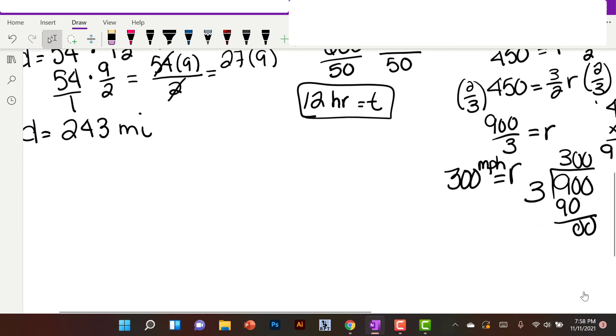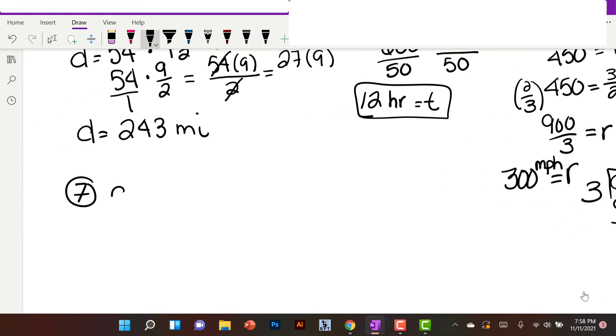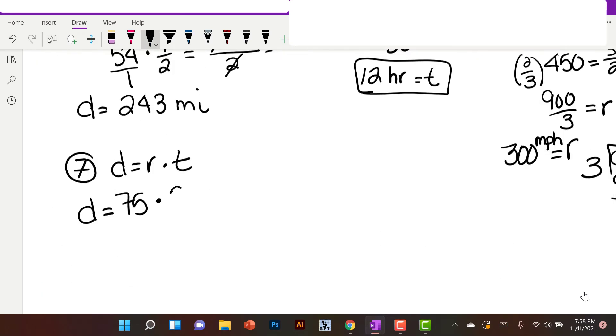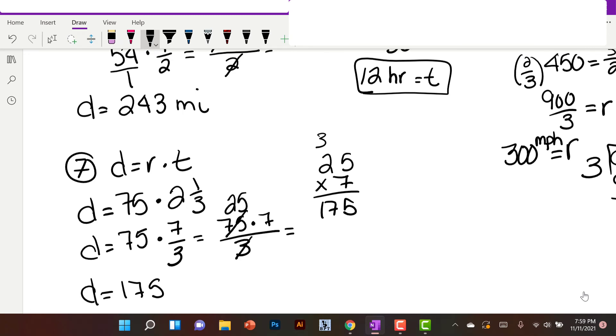Number 7. Distance equals rate times time. We don't know the distance. The rate is 75 miles per hour, and the time is 2 and 1 thirds hours. Distance equals 75 times 3 times 2 is 6, plus 1 is 7. I'm going to multiply straight across: 75 times 7 over 3. I did that because I know there are 3 25s in 75. 25 times 7 is 175. So the distance is 175 miles.